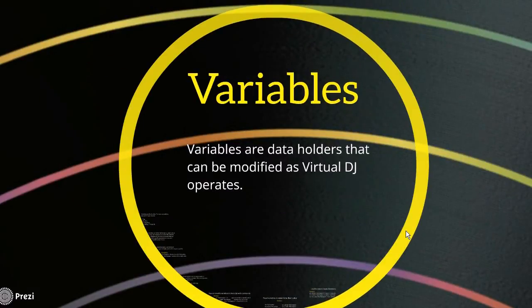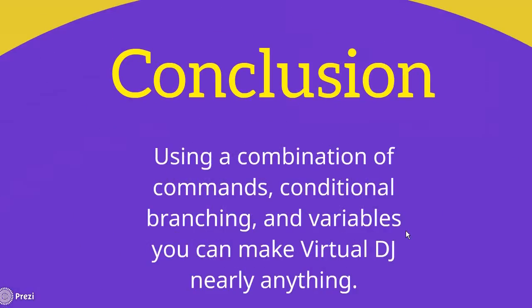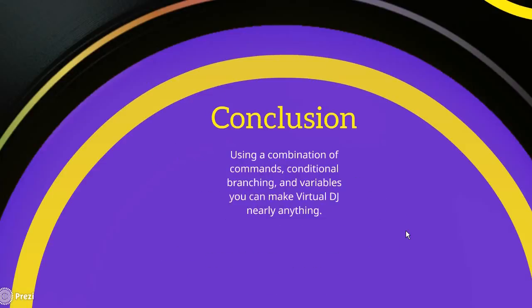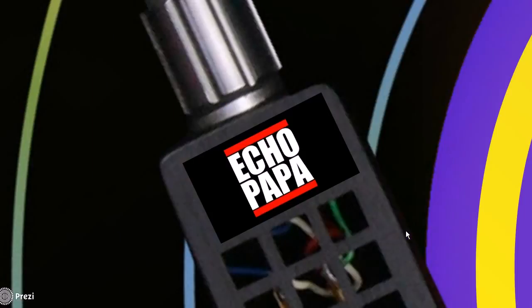So those are variables and some of the cool things you can do with them. In conclusion, using a combination of commands, conditional branching, and variables, you can make Virtual DJ do nearly anything. I don't do a lot of complex commands myself, but if you look at things like mapping two effects to one button, that's basically just linking two commands together. Anyway, that's Virtual DJ 8 script concepts — my name is Echo Papa, and I'll talk to you later.